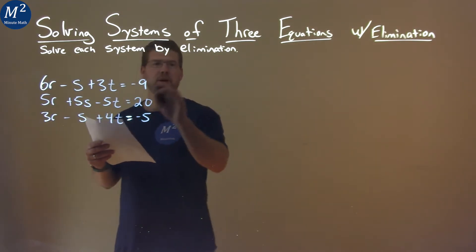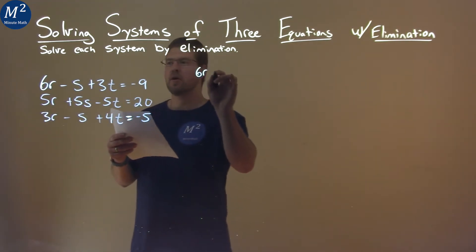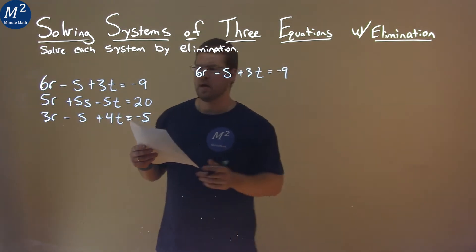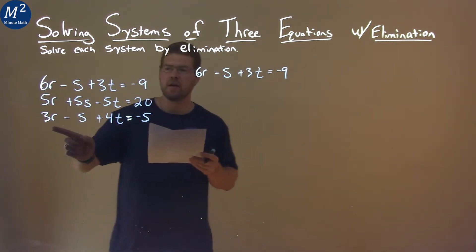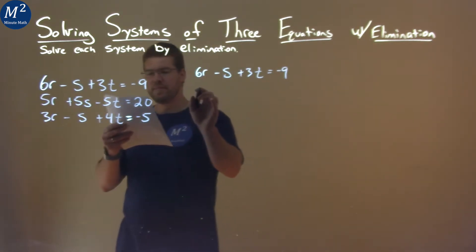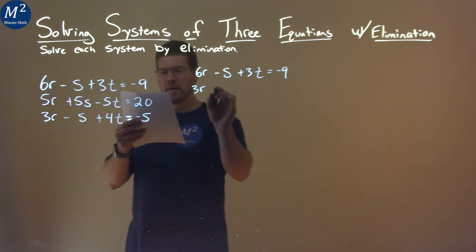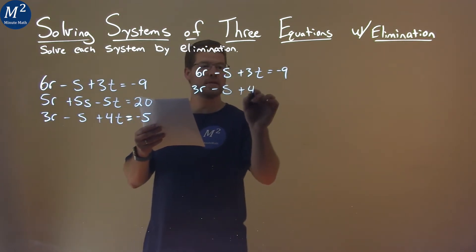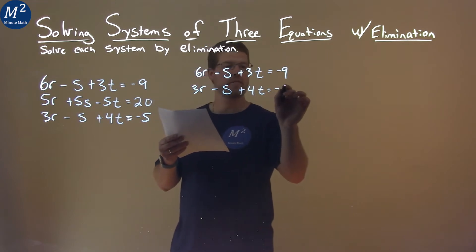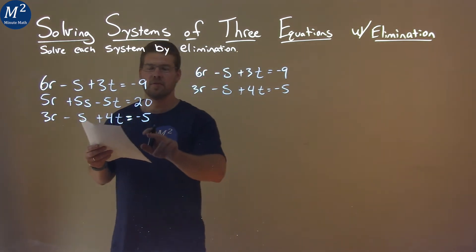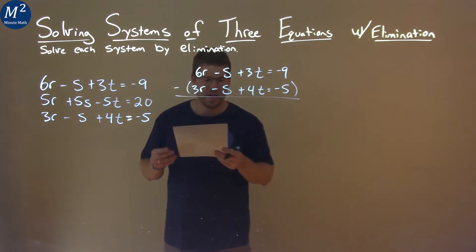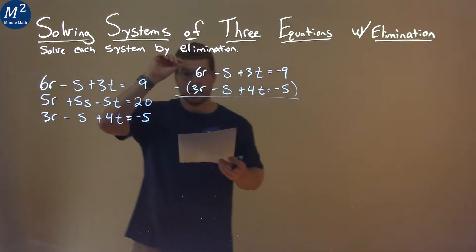Our first equation, if I rewrite it here, 6r minus s plus 3t equals negative 9. And I combine that with our third equation, 3r minus s plus 4t equals negative 5. I pick these two because if I subtract the second one, we can see that we will eliminate the s variable, hence solved by elimination.